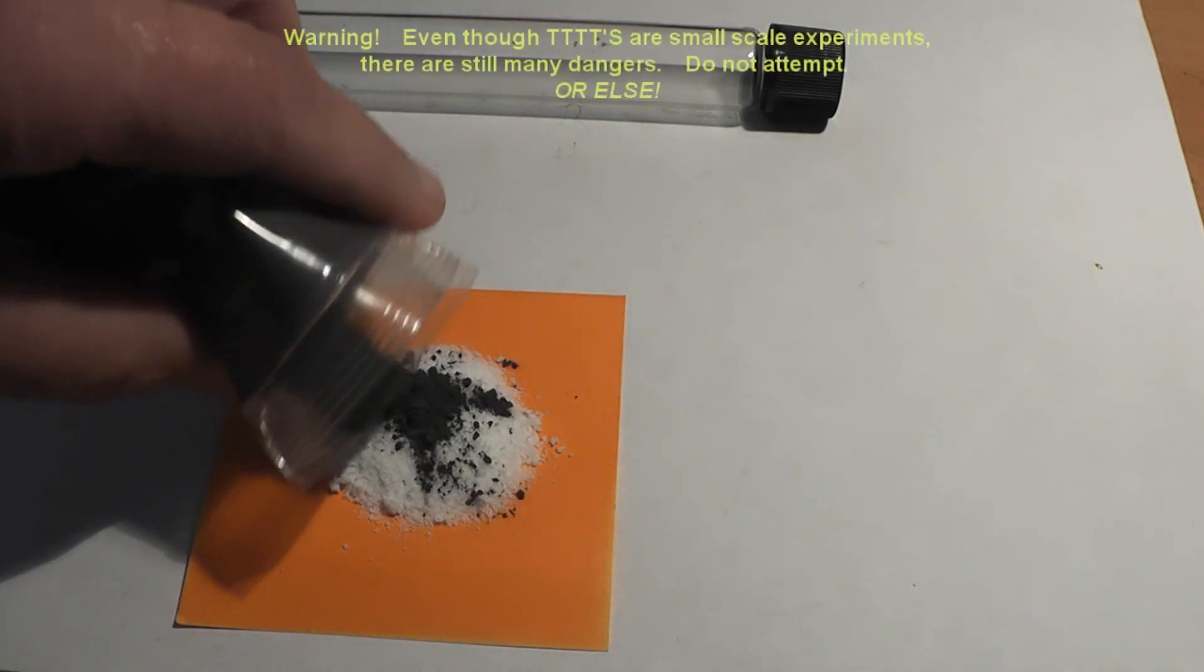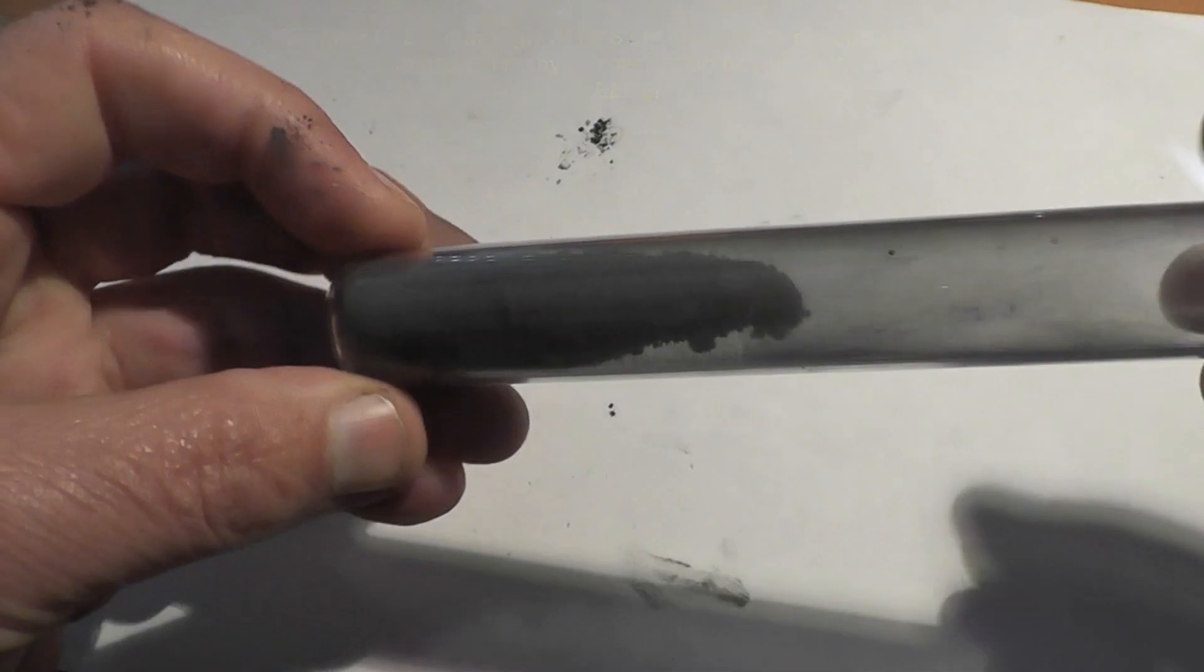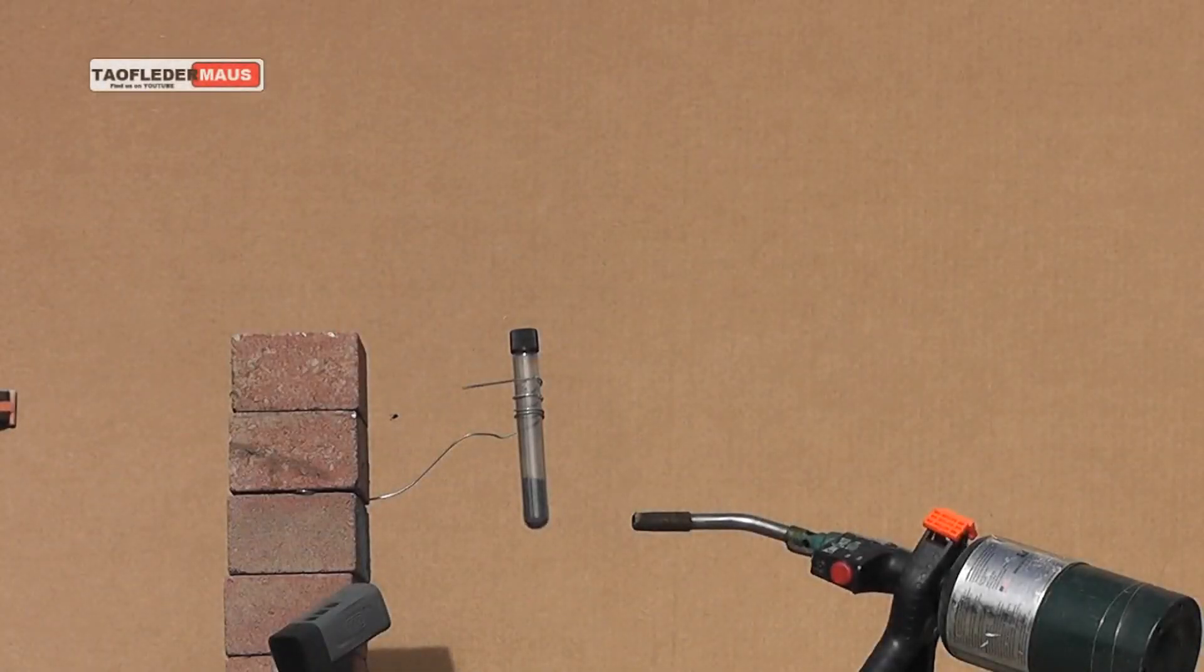Today we're going to see what happens when we take Tannerite, which is aluminum powder and ammonium nitrate, and put it in a test tube and heat it up.